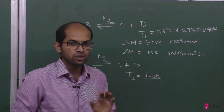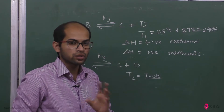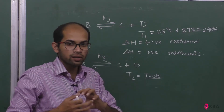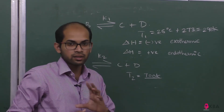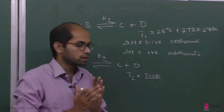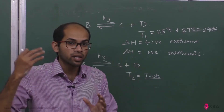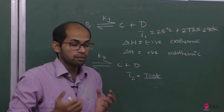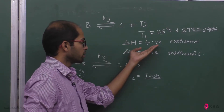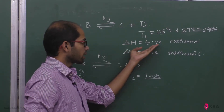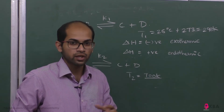Delta H is the enthalpy change. In the thermodynamics chapter, if delta H is negative, the reaction is exothermic — meaning the reaction releases heat.